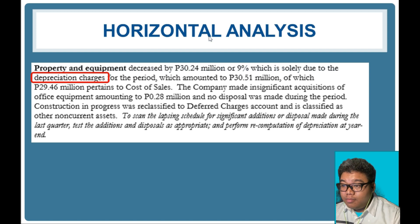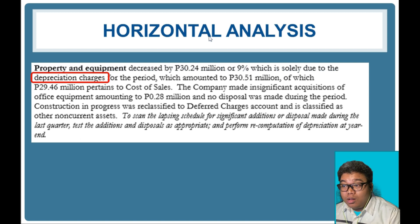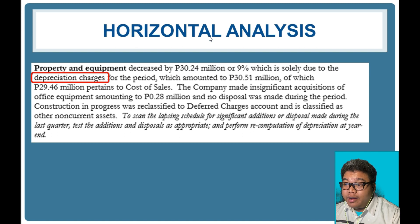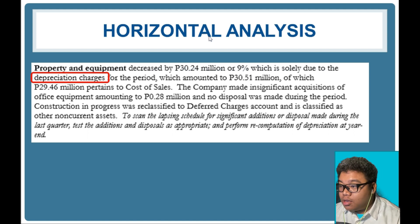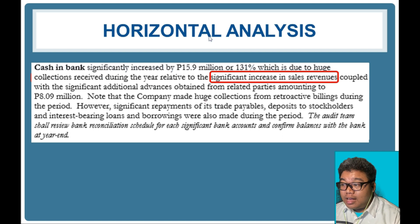There is a preliminary assessment of risk in auditing, and to gain an understanding of balances we perform financial statement analysis — we establish our expectations and compare them to actual figures computed in horizontal and vertical analysis. When there is a significant deviation between our expectation and actual figures, we consider that line item as significant or high risk. For example, cash in bank has a change of 131 percent, correlated to the increase in sales revenue.